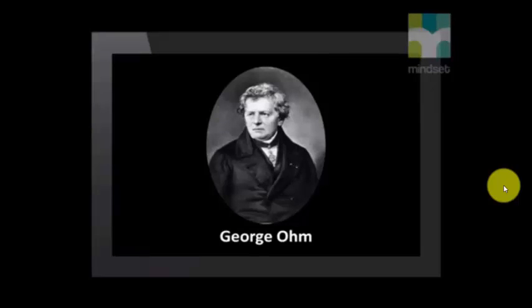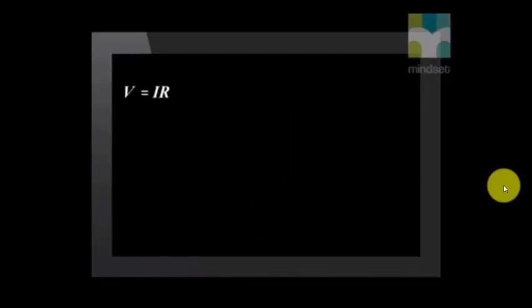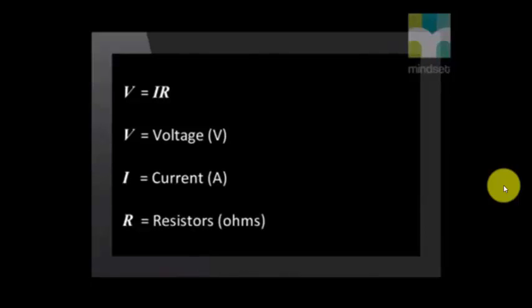The relationship between potential difference, current, and now resistance, is very helpful in assisting us in designing a circuit or appliance. George Ohm was the first scientist to investigate this relationship. He formulated the relationship between potential difference, current, and resistance by the following law, known as Ohm's law. Mathematically, he expressed it as V equals I times R, where V equals the voltage, measured in volts, I is the current, measured in amperes, and R is the resistance, measured in ohms. This relationship is only true if the temperature of the conductor remains constant.